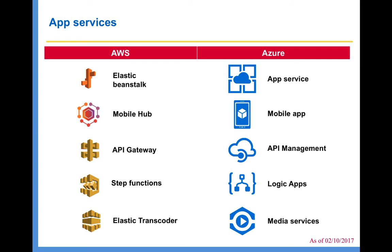When it comes to exposing APIs to the outside world, you can expose APIs through the cloud using AWS API Gateway or Azure API Management. Using either one of them, you will be able to expose APIs in a secure manner and control the throughput and manage them. The fourth app service area is Step Functions and Logic Apps, using which you will be able to develop system workflows.